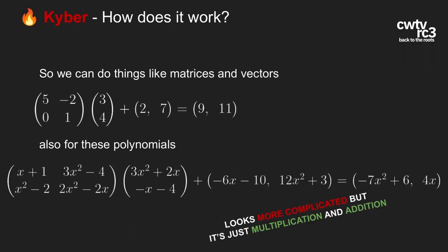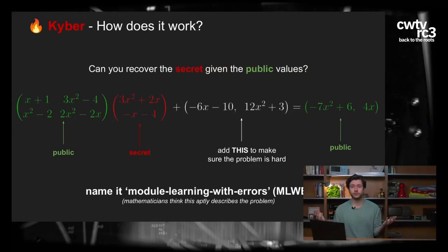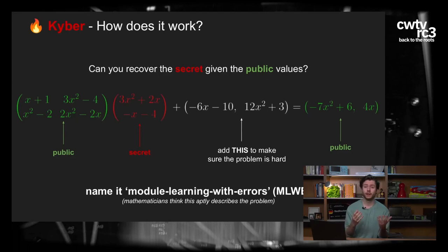Wenn wir Multiplikationen und Additionen mit Polynomen machen können, dann können wir auch Vektoren bauen – wir können eine Matrix mit einem Vektor multiplizieren und einen anderen Vektor dazu addieren. Das funktioniert genau mit Polynomen. Wenn wir eine Matrix mit Polynomen und einen Vektor mit Polynomen multiplizieren und einen weiteren Vektor hinzu addieren, ist das nicht sonderlich viel komplexer. Wenn ich das Ergebnis dieser Berechnung und die Ausgangsmatrix gebe, ist es sehr schwer, den ursprünglichen Vektor herauszubekommen. Das ist das fundamentale Problem für Kyber.